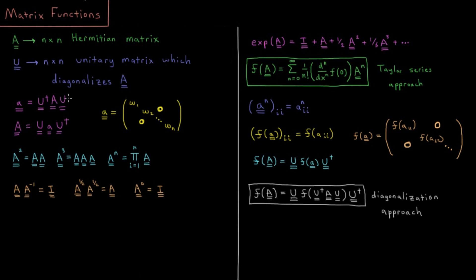So what can we do to matrices in terms of taking functions, like we would think of taking a function of x, y, or z? Just like with regular variables, we can square matrices: A squared equals A times A. A cubed equals A times A times A. In general, taking a matrix to a power means A to the n, which is just multiplying A by itself n times — fairly straightforward for any integer power.